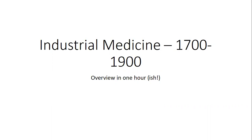This is the third unit of Medicine Through Time, Paper 1, and what this video is going to cover is everything to do with industrial medicine, 1700 to 1900. What I'm aiming to do in this video is to focus on the three strands of the exam: what were the causes of disease and who improved it, treatment and surgery, and then prevention of illness.